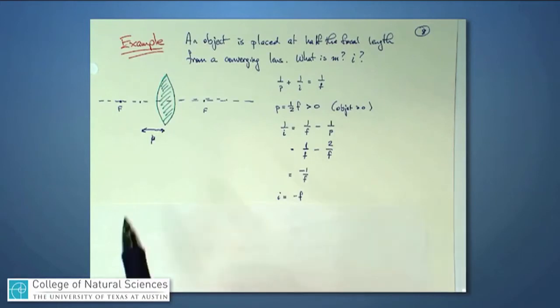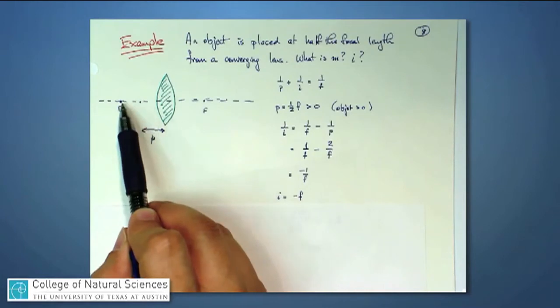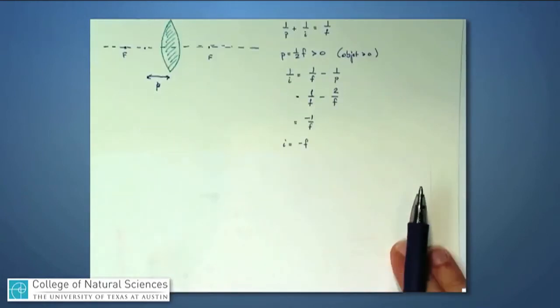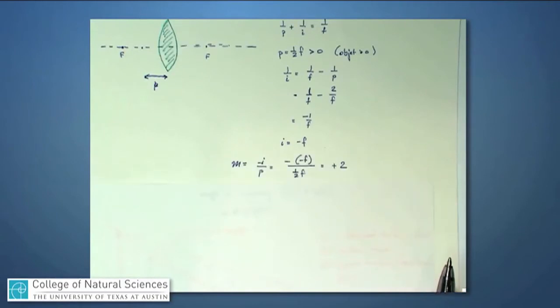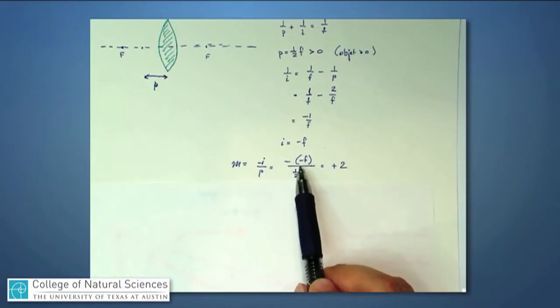It means that I can put an object in front of a converging lens right there, and the image distance is actually way over here. What about the magnification? Magnification is always minus i over p. i came out to be a negative number. It came out to be negative f. And p was 1 half f.